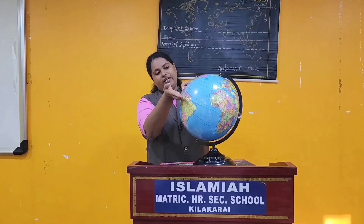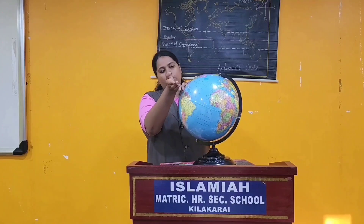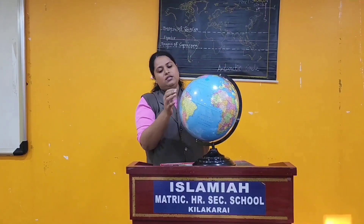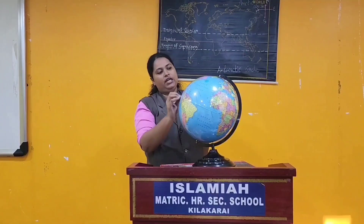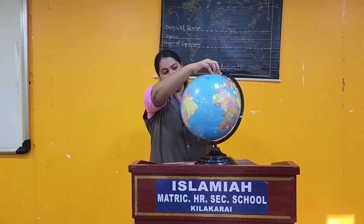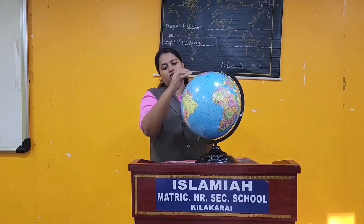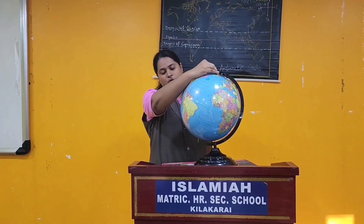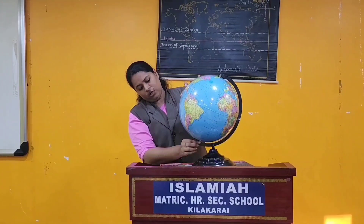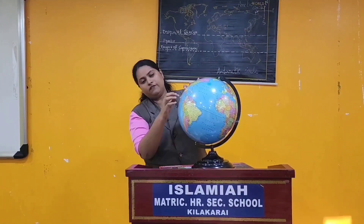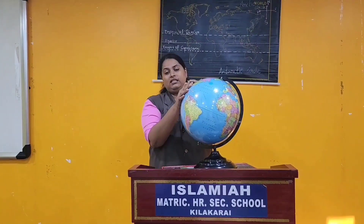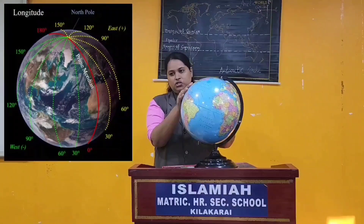The equator divides the globe into two equal hemispheres. From zero degrees towards the north pole, 90 degrees gives you the northern hemisphere. And from the equator to the southern pole, 90 degrees gives you the southern hemisphere.